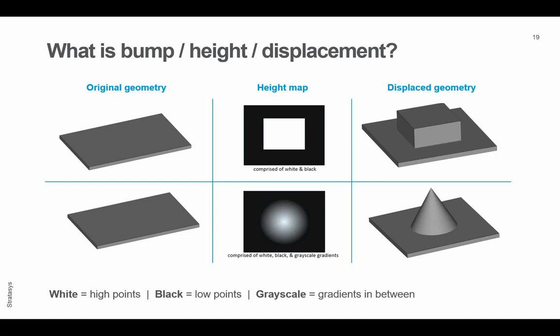If I apply the image as a bump or height map in the middle and convert that into a displacement, I'm actually going to be changing the geometry. So I have this extruded block in the middle of my part, and we can make this more complicated and create smoother transitions by using gradated grayscale colors.